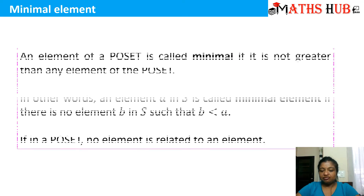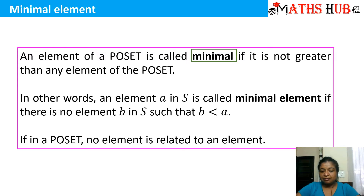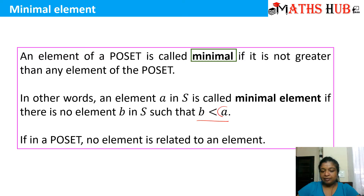A minimal element means an element of a poset is called minimal if it is not greater than any element of the poset. When we talk about a maximal element, no element should be greater than that element, and when we talk about a minimal element, no element should be less than that element. In other words, an element A in S is called the minimal element if there is no element B in S such that B is less than A.